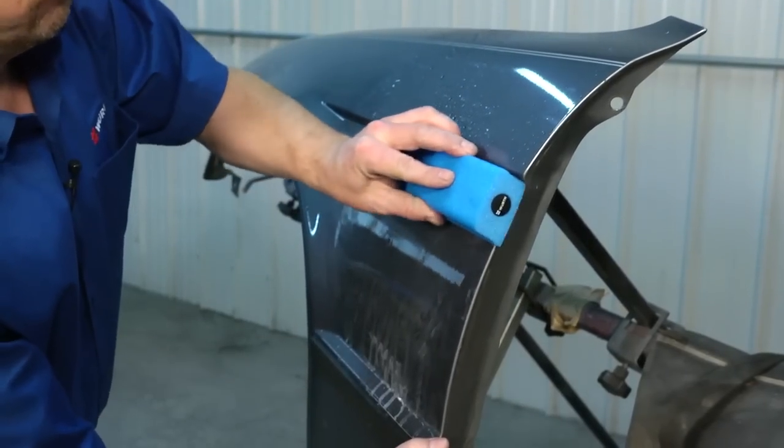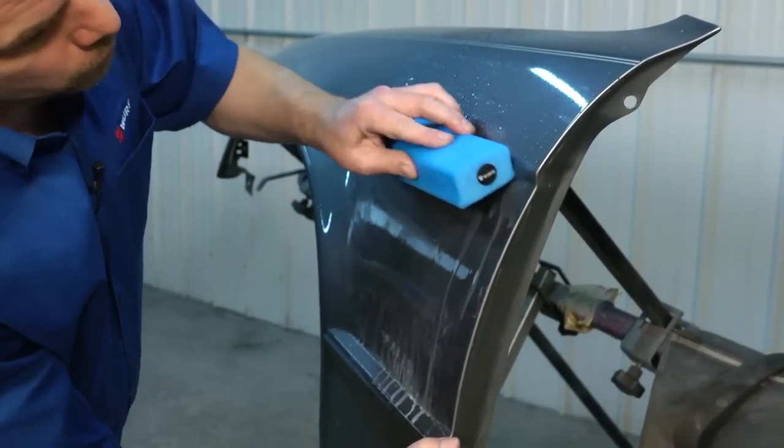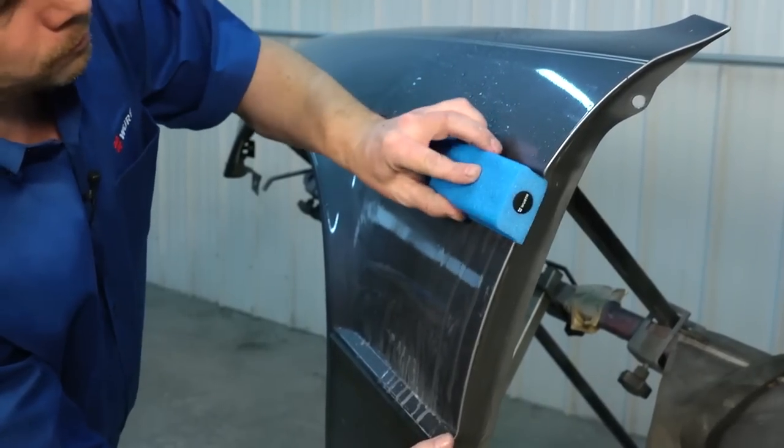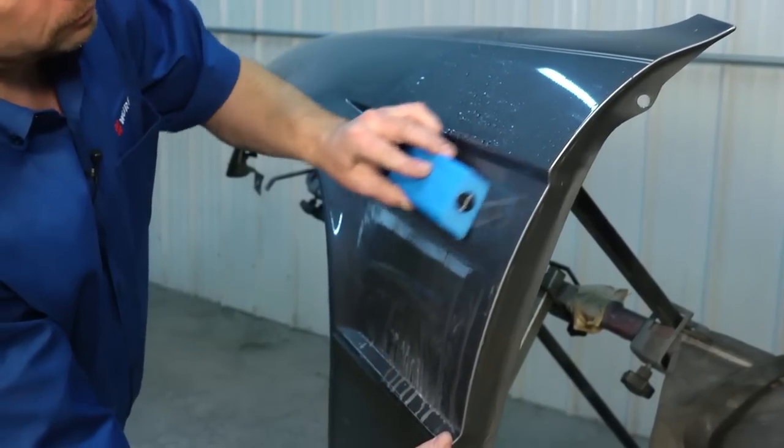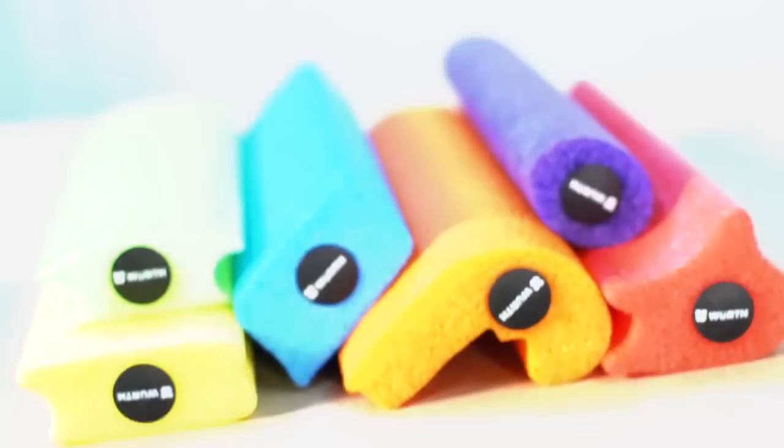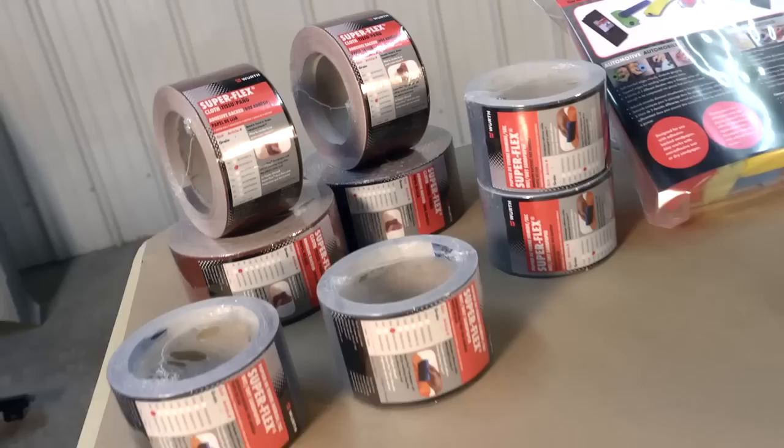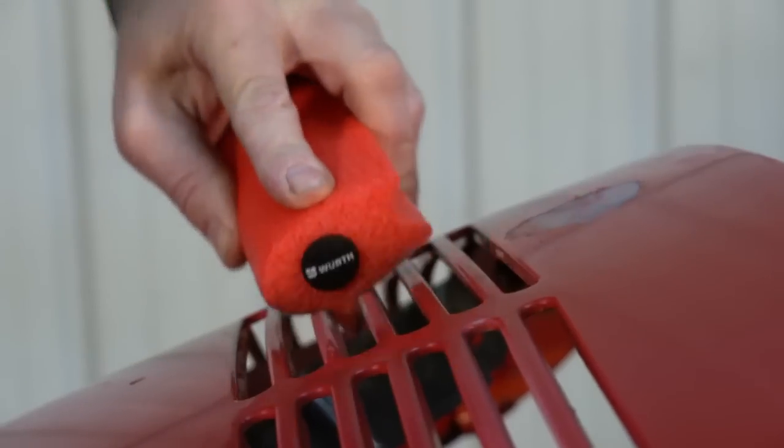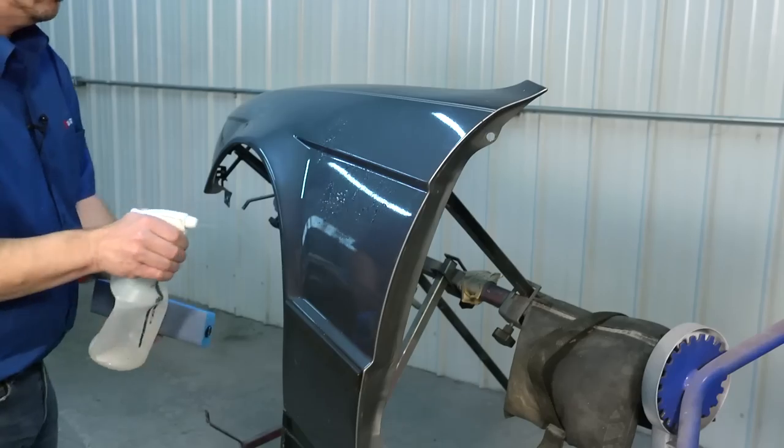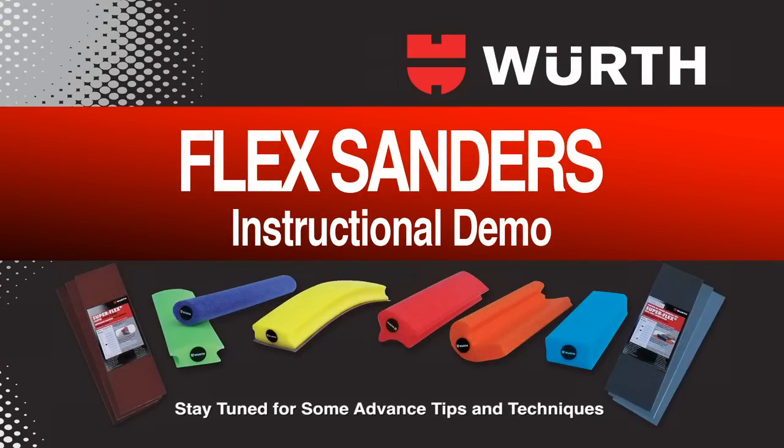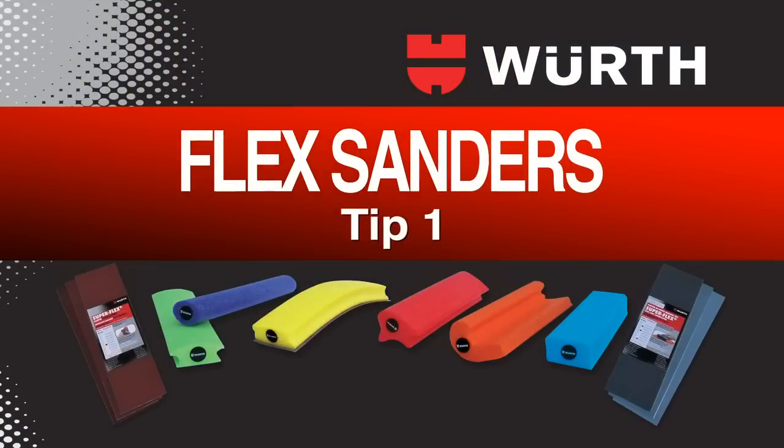The ability to use multiple work surfaces of the flex sanders is obvious here. A slight tilt of the block, and you're easily blocking a very difficult area to sand with any other block.